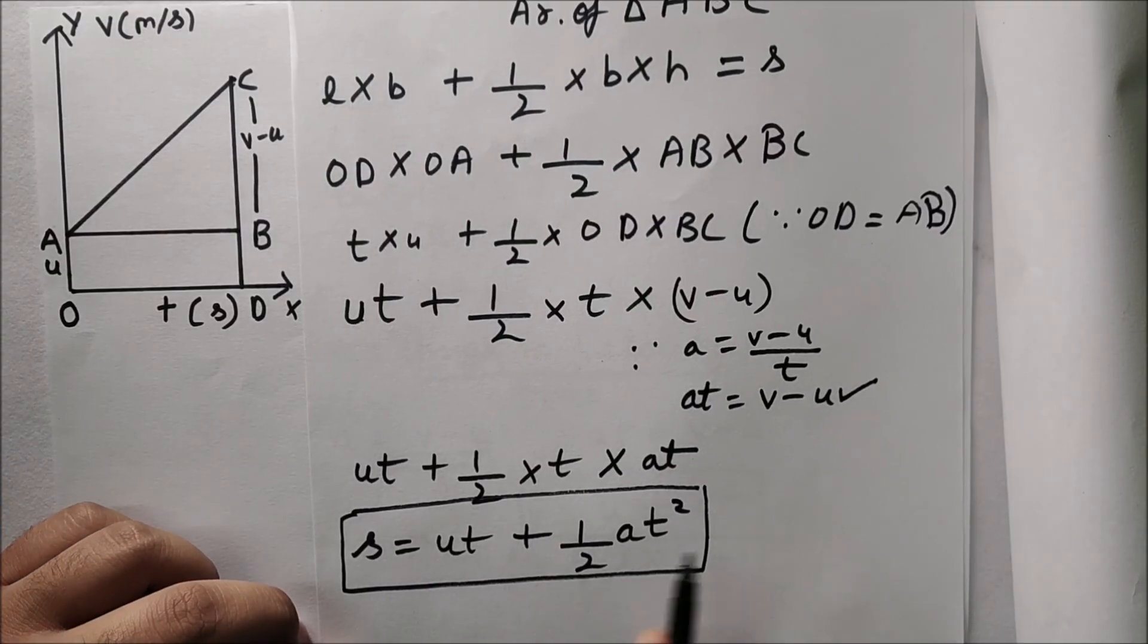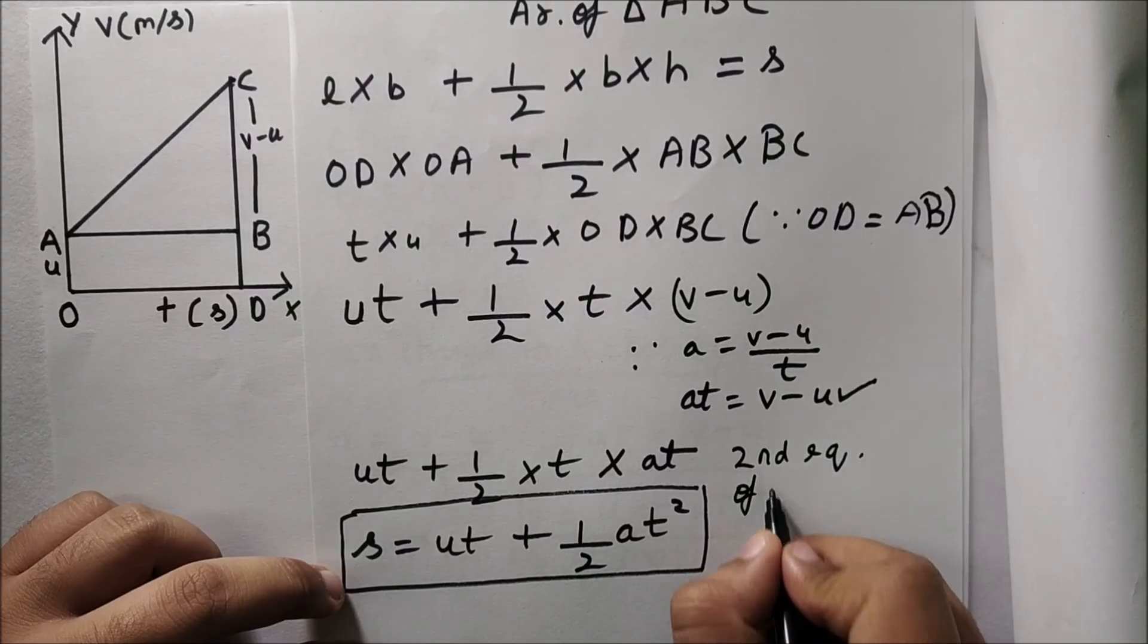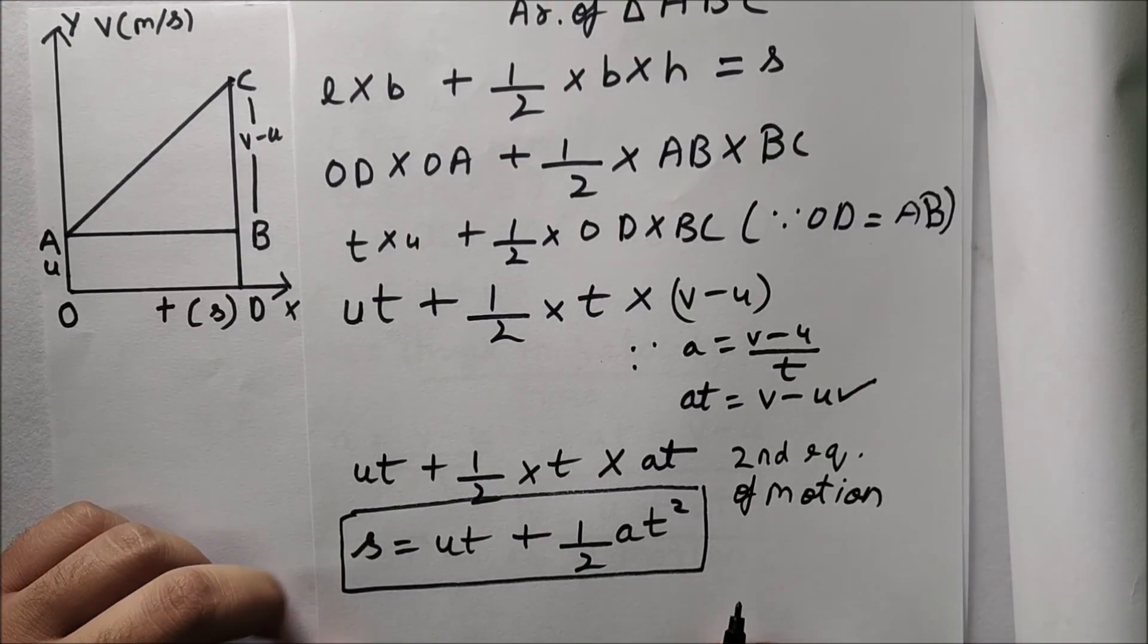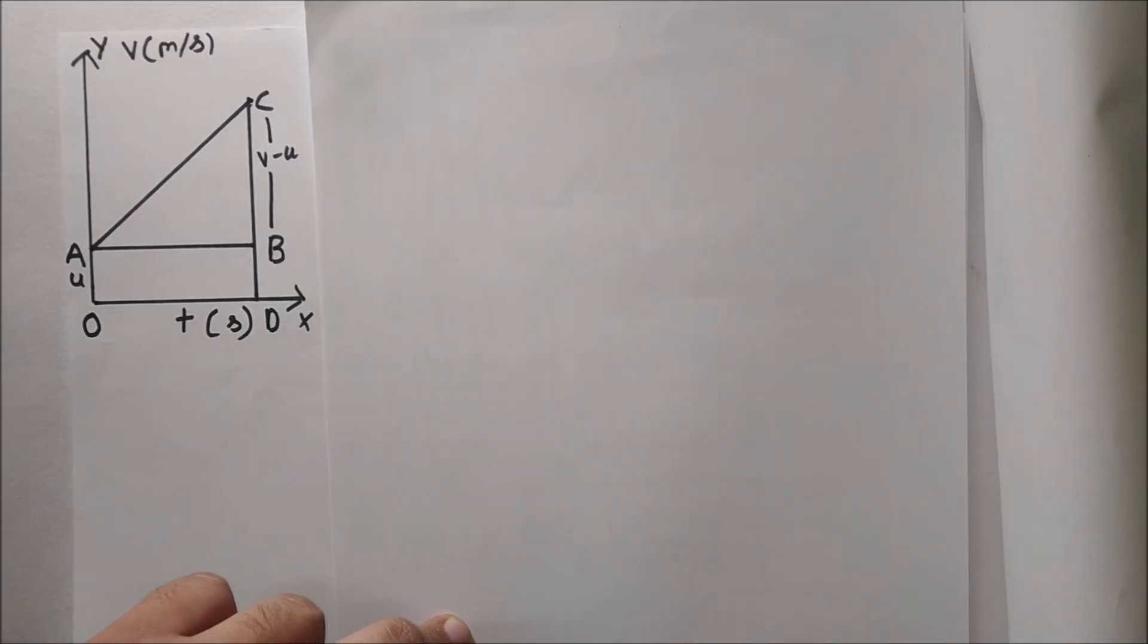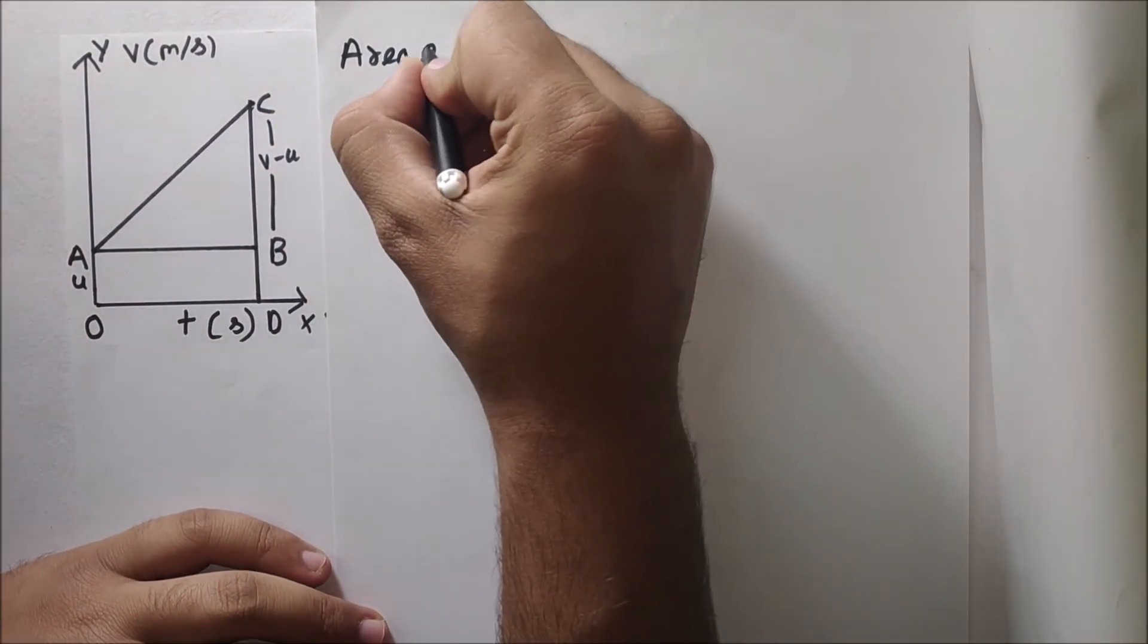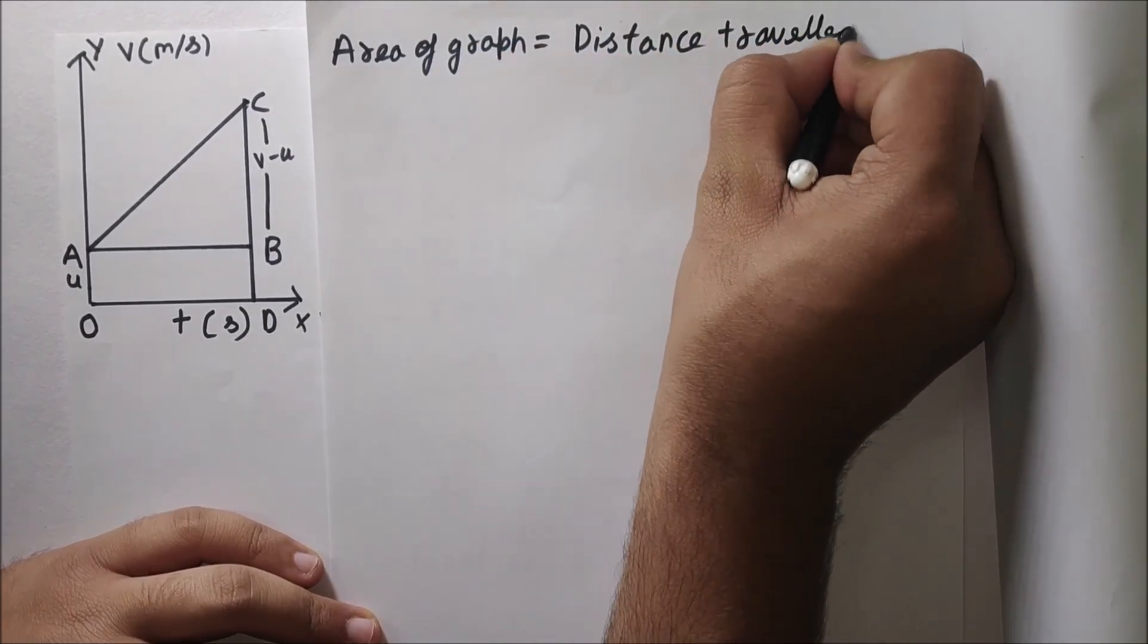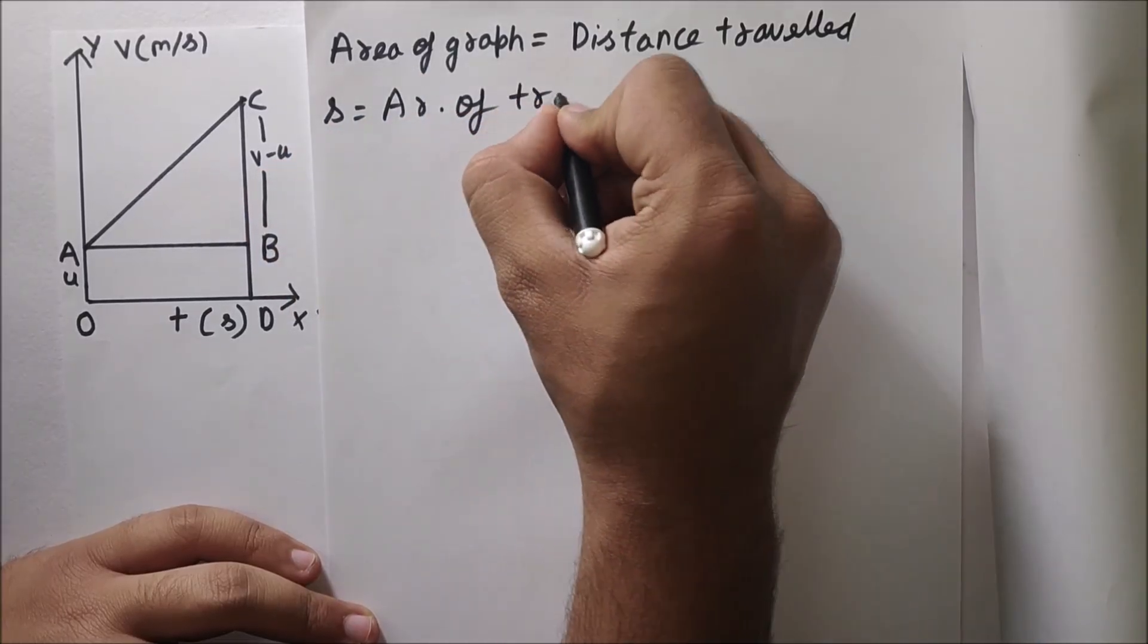The second equation of motion has been derived. Now let us start with the third equation of motion. This rule applies in this also. The area of graph gives us the distance traveled by the object. So the distance traveled will be s and we need to find the area of trapezium ODCA.